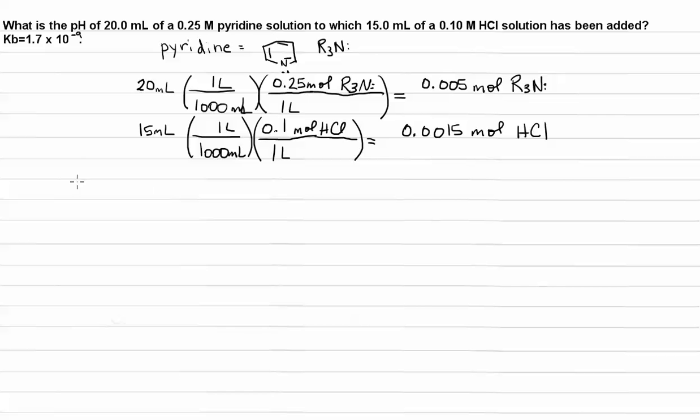Let's see what happens when we bring these two things together. Let's predict the products. R3N is a weak base. It's going to take the proton off of HCl. And it is a reaction, not an equilibrium. So after this takes the proton away, you form R3NH+. That's the conjugate acid of R3N, the conjugate acid of pyridine. And chloride ion is left over.